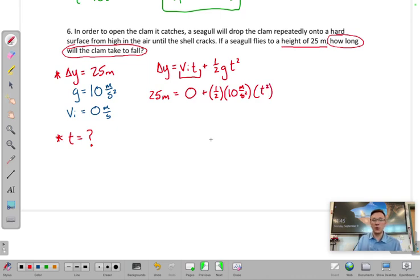So you can see it simplifies to delta Y, 25 meters, equal to five meters per second squared times t squared, right? Now the next step here is to go ahead and divide by five meters per second squared on each side.